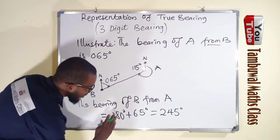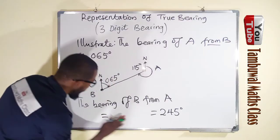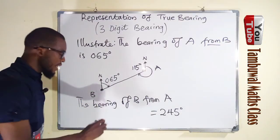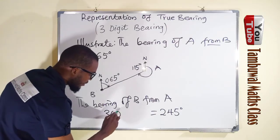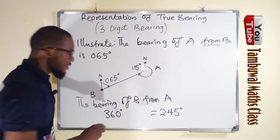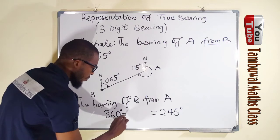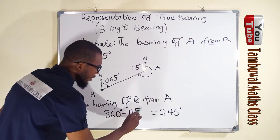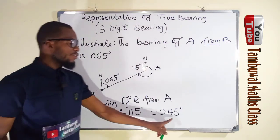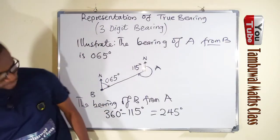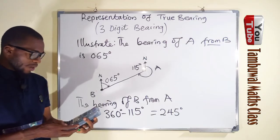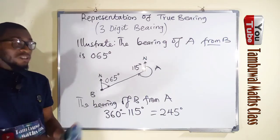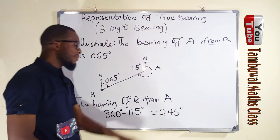So we can say that the bearing of B from A is the same thing as 360 degrees, which is an angle at the center, minus this 115 degrees. And you shall obtain the same thing. Let us confirm it. 360 minus 115 is equal to 245 degrees.